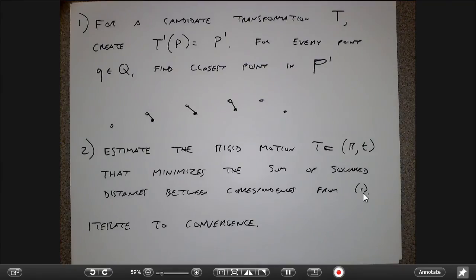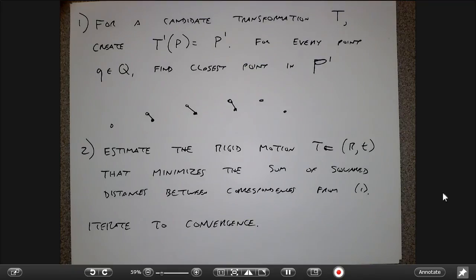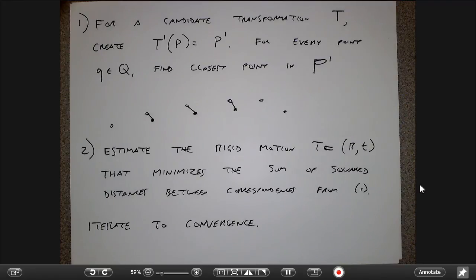The whole point of 3D features is that you really only need them to seed the registration process — it's not like you're using features continuously throughout. You try to find a few good feature matches to seed the registration, but then in ICP these points are not just feature points. Every single point in both scans plays a role — instead of just looking at the few sparse features you can grab off surfaces, every point in both scans is pulling together the registration. There's a nice closed-form solution for estimating the best rigid motion.